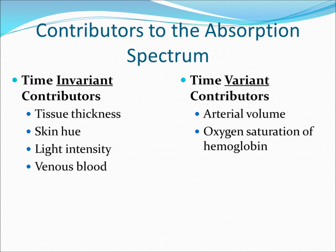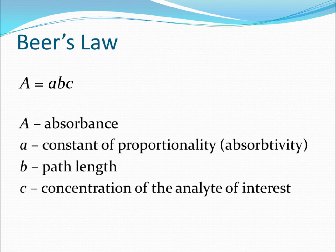The pulse oximeter is based upon Beer's Law, an empirical relationship that describes how three variables affect the absorbance of a substance. Beer's Law is a simple expression given by A = abc, where A is the absorbance, a is the constant of proportionality known as the absorptivity or the likelihood that a photon will excite a given molecule, b is the path length, and c is the concentration of the analyte of interest.